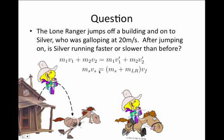After the Lone Ranger has hopped onto Silver, then the two masses are both being moved down the road at the same velocity, v final. And so we can factor out the v final from both terms here in the momentum on the right-hand side and say that the sum of the two masses times v final equals the final momentum.